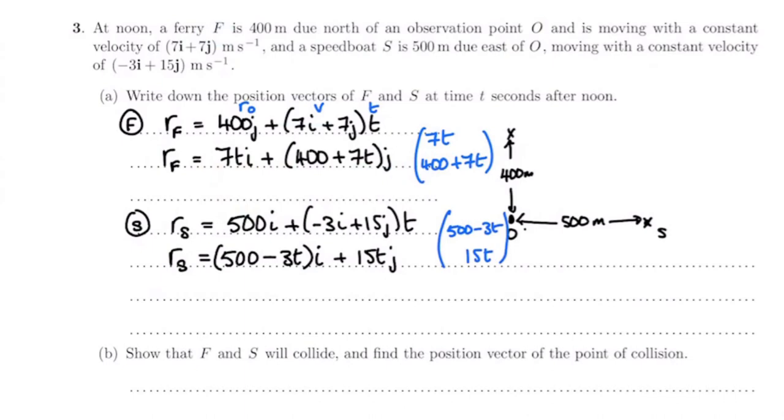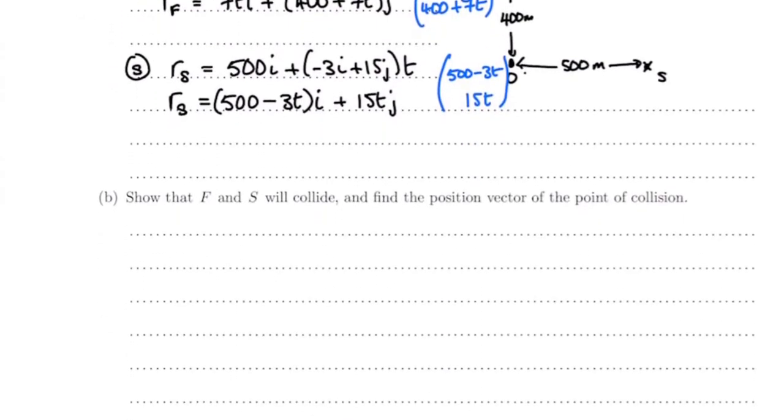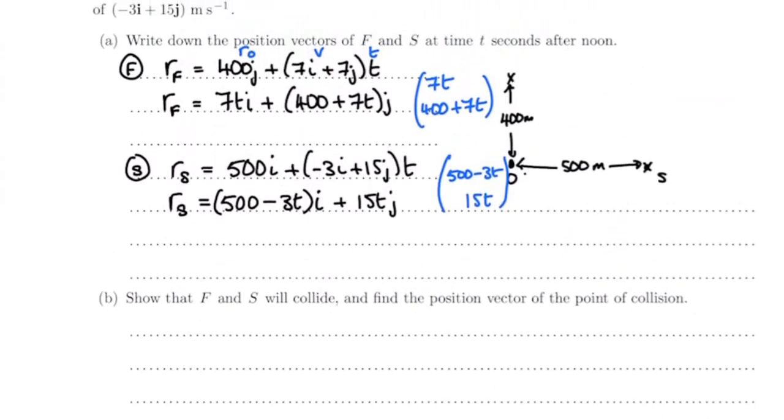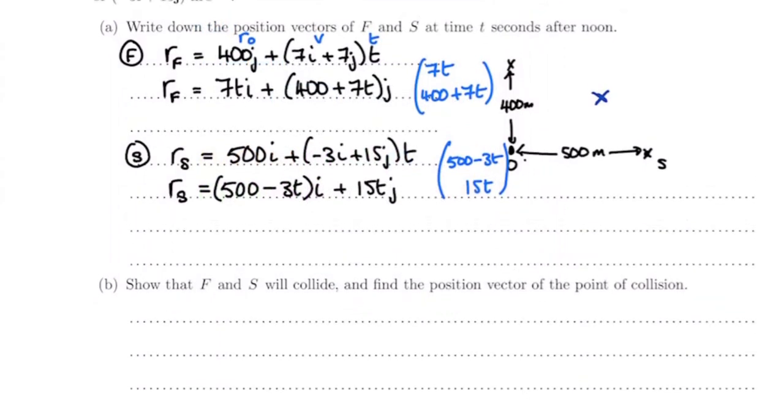The next bit says show that F and S will collide and find the position vector of the point of collision. Now if they collide, think about here: if they collide in reference to the origin, their i components and their j components must be the same. So if they collide, we can see from what we've done before that 7t must equal 500 minus 3t, and the j components must be equal: 400 plus 7t must equal 15t.